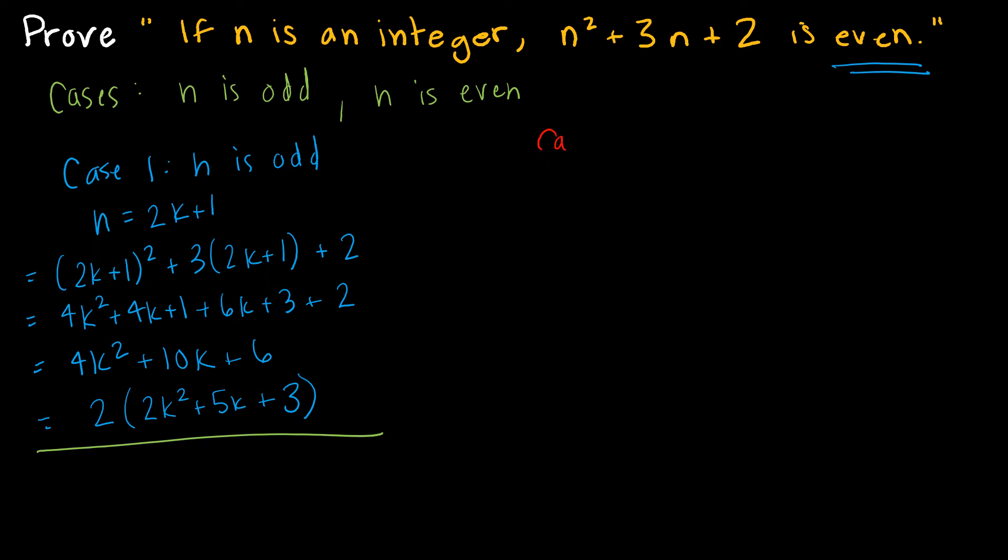So now let's take a look at the other one. So case two. n is even. So again, if n is even, then I can write n as 2k. And I'm going to essentially do the same thing. So I'm going to take 2k squared plus 3 times 2k plus 2. That gives me 4k squared plus 6k plus 2.